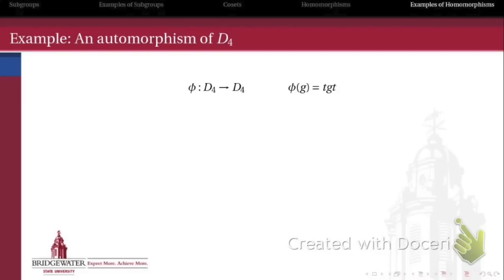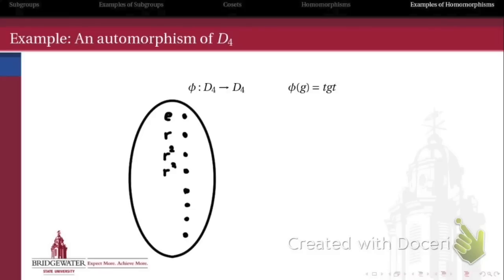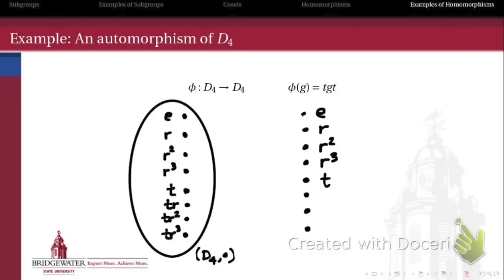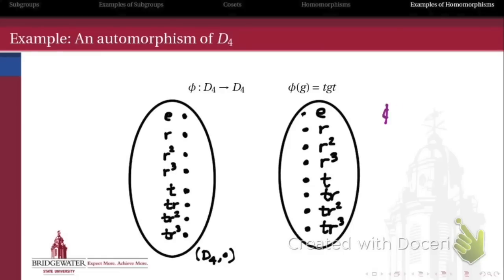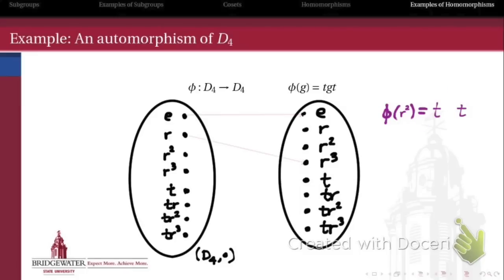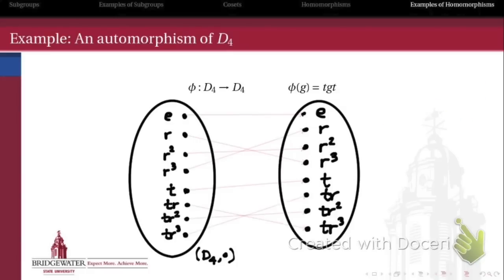Now let's look at an automorphism of the dihedral group D4. We define it by taking every element g of D4 and multiplying it on both the left and the right by the transposition T — the horizontal reflection of the square. There are eight elements in D4, and this function sends each to possibly a different one of those eight elements. Working these out: φ(e) = e, φ(r) = r³, φ(r²) = r², φ(r³) = r, φ(t) = t, φ(tr) = tr³, φ(tr²) = tr², and φ(tr³) = tr.